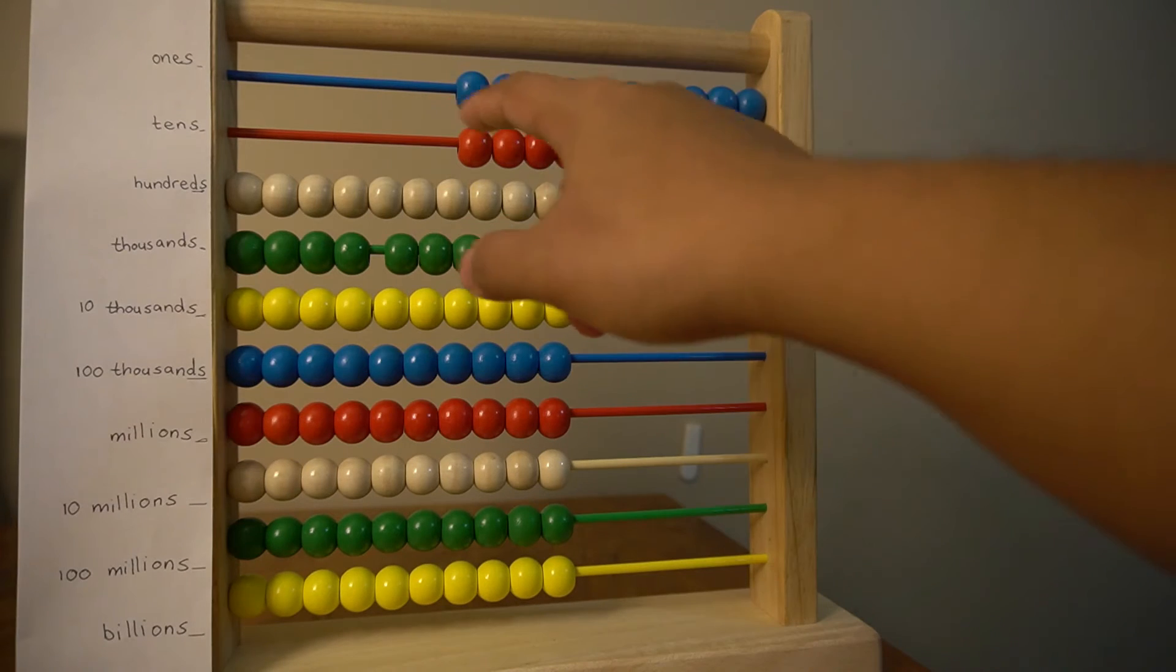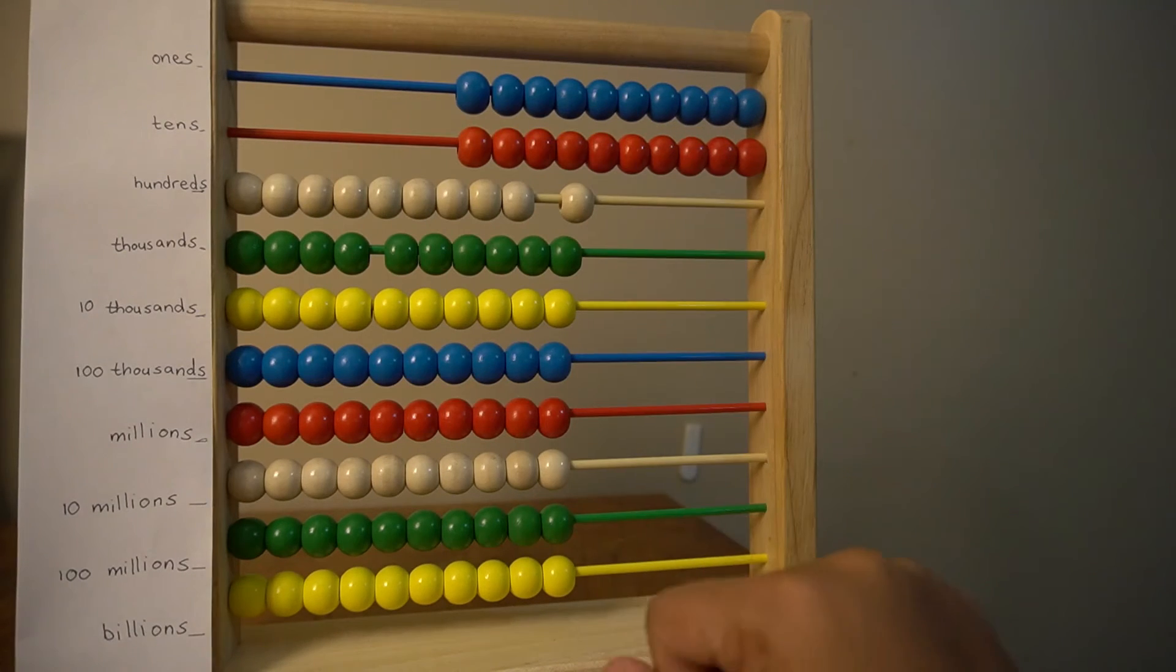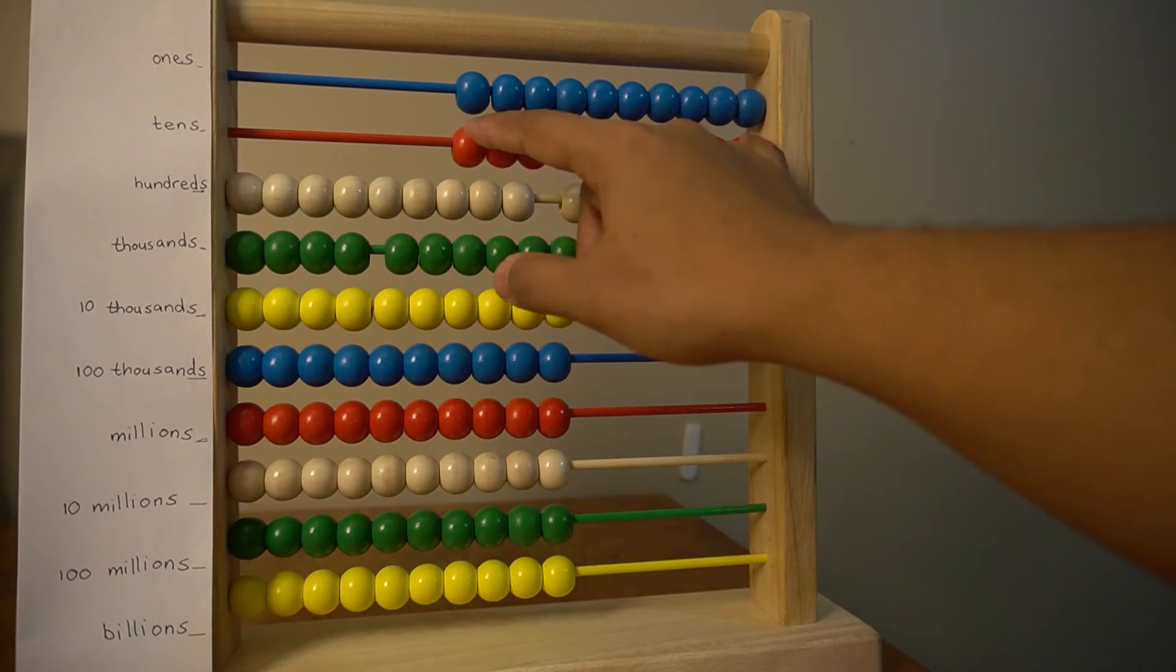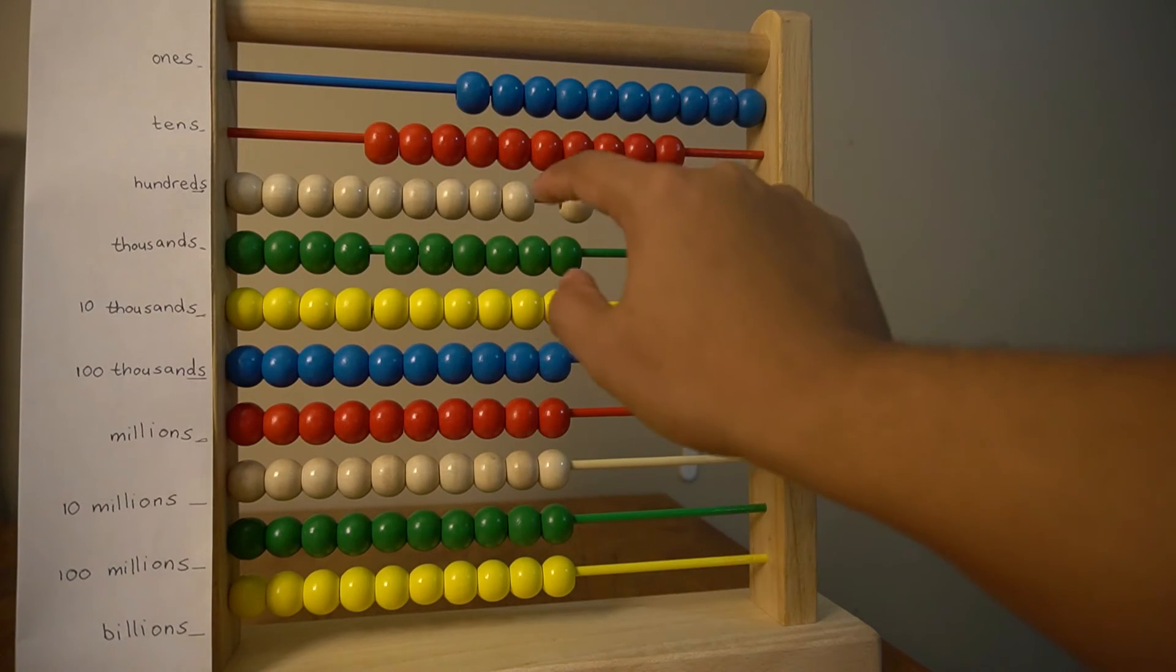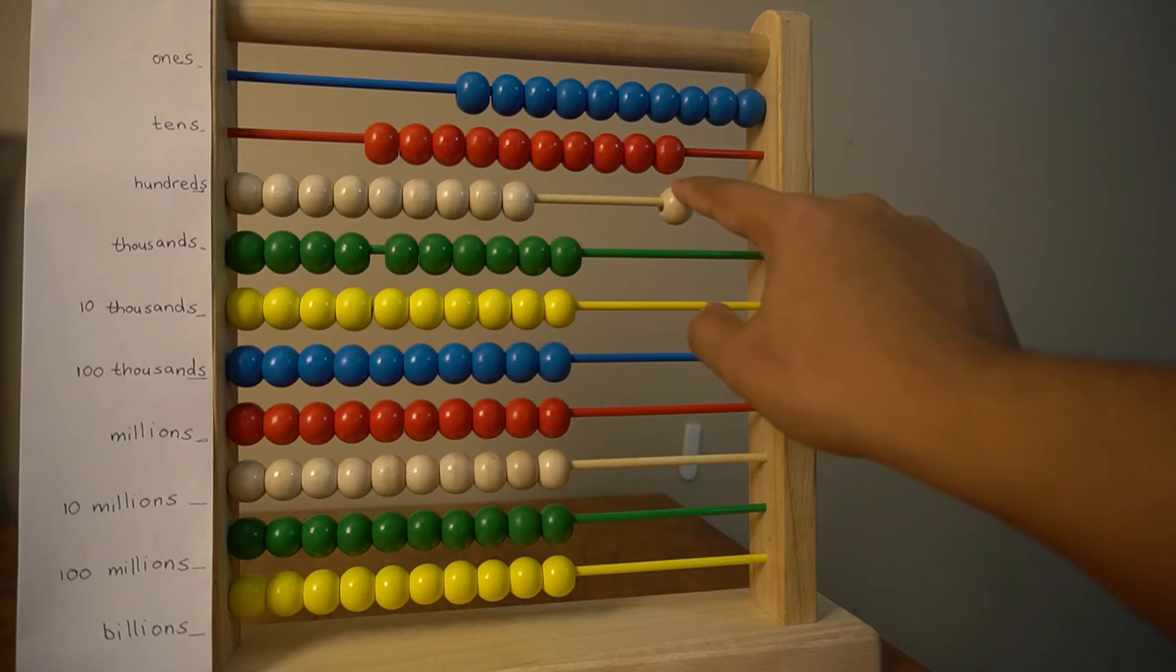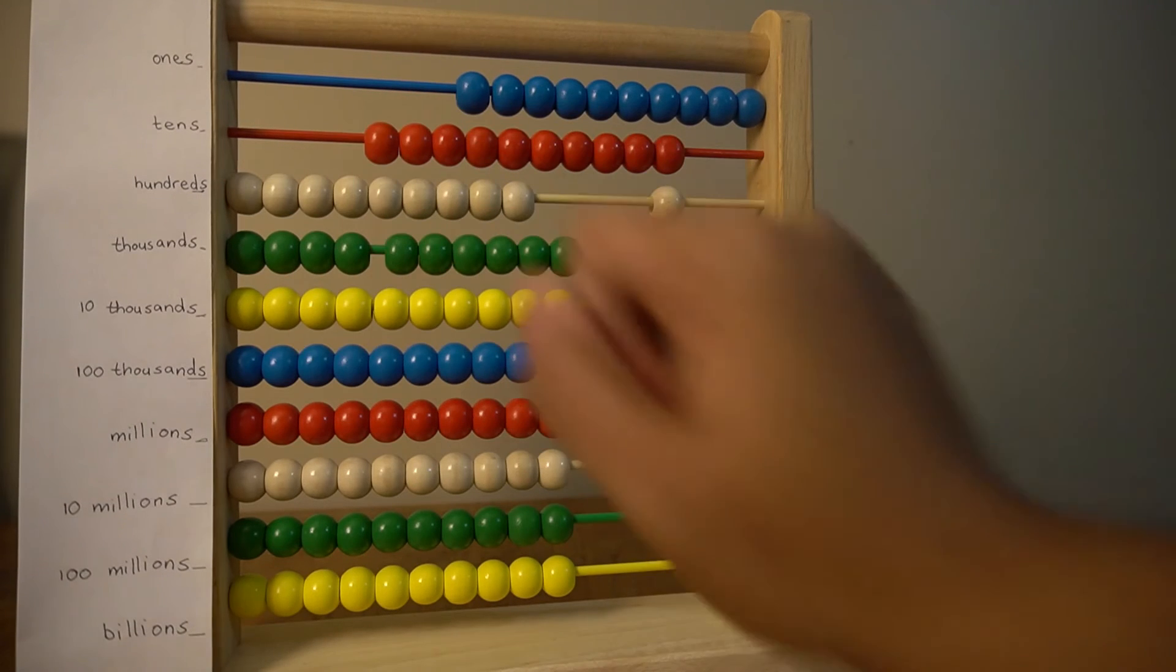And so now we move on to the hundreds row, which means I need ten of these red beads in the tens row to make one of these white beads in the hundreds row. So let's count the white beads.